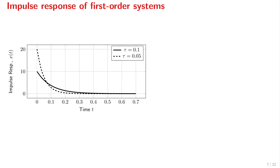Here we see the impulse response of a first-order system with K equals 1, plotted for two different values of tau. We see that for a smaller tau — a smaller time constant — the response becomes steeper and tends to converge to zero faster. That covers the impulse response.